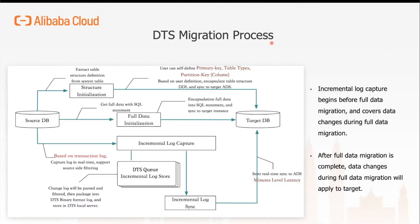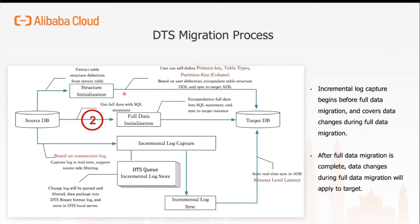This is how the DTS migration process works. Step 1, DTS extracts the table structure definition from the system table on the source side and initializes those structures on the target database. Users can also define the primary key, table types, or partition key during configuration. Once the structure is created, DTS performs a full data initialization using SQL statements. While that runs, DTS also captures incremental logs based on the transaction log of the source database — for MySQL it captures bin log, for Postgres it captures WAL log — and stores them into the log store on DTS.